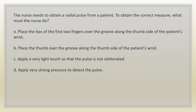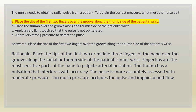The nurse needs to obtain a radial pulse from a patient. To obtain the correct measure, what must the nurse do? A. Place the tips of the first two fingers over the groove along the thumb side of the patient's wrist. B. Place the thumb over the groove along the thumb side of the patient's wrist. C. Apply a very light touch so that the pulse is not obliterated. D. Apply very strong pressure to detect the pulse. Answer: A. Rationale: place the tips of the first two or middle three fingers over the groove along the radial or thumb side of the patient's inner wrist. Fingertips are the most sensitive parts of the hand. The thumb has its own pulsation that interferes with accuracy. The pulse is more accurately assessed with moderate pressure; too much pressure occludes the pulse.